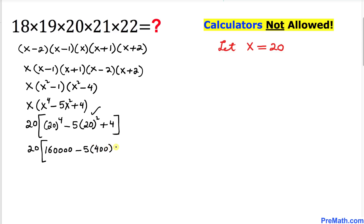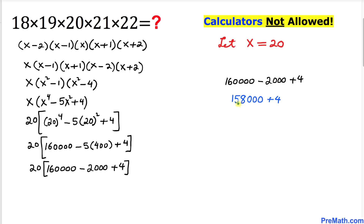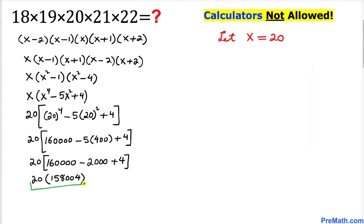So 5 times 400 gives us 2,000. Now let's focus on the numbers inside the bracket: 160,000 minus 2,000 plus 4. That gives us 158,004. So we now have 20 times 158,004.